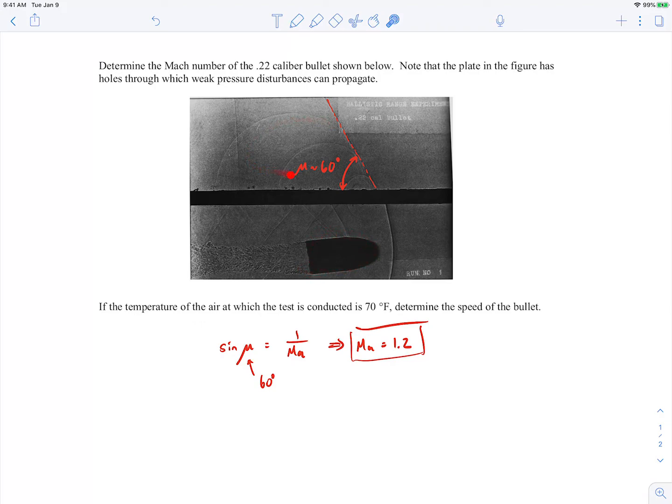So that's the Mach number of this bullet. Again, we have to use these weak pressure waves to get the Mach angle, because the Mach angle is based on essentially a sound wave or a very weak pressure wave. We can't use this because that's a strong shock wave, and its angle here will be different.